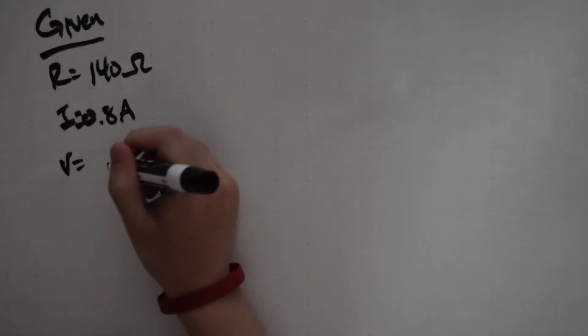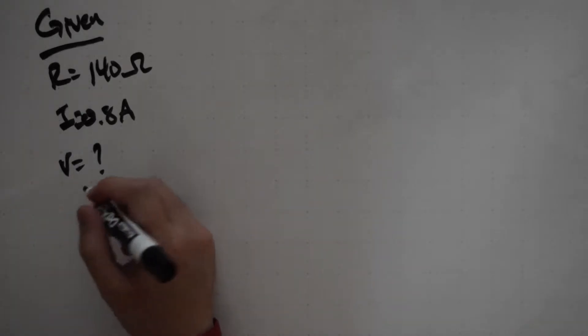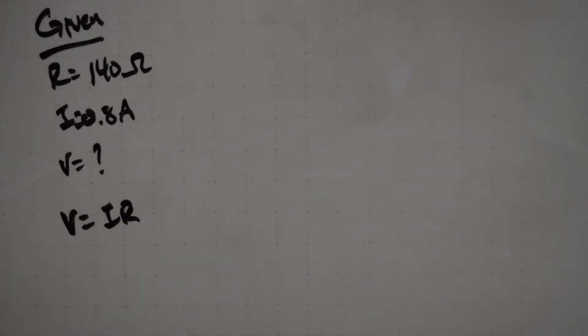This asks us to find V, which is the electrical potential, and our equation for Ohm's Law is V equals IR. Take a look at your givens and we note that we are looking for V and V is on the left side of the equation, so the equation we're going to use we don't need to manipulate.